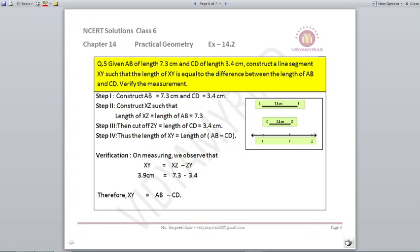Okay, now what you are going to do is draw any line L on it and mark a point X. Now what we are going to do over here, we will construct XZ such that the length of XZ is equal to length of AB, that is 7.3 centimeters, and we will cut off ZY. We will move backwards. So what are we going to do? We will put our compass needle at Z and we will stretch our compass at 3.4. So just cut an arc and name it as Y.